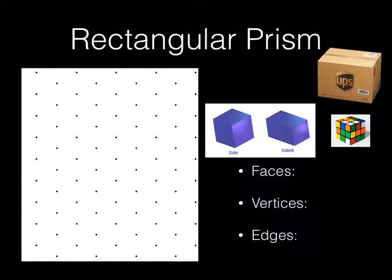Rectangular prism — like a box. The pictures in purple came from the website Maths is Fun — that's Maths with an S — which is a British website. They call a rectangular prism a cuboid, or a cube. So we're going to look at rectangular prism and cube. I'm going to use my isodot paper. Whatever you want the top of the prism to be, you're going to draw it diagonally.